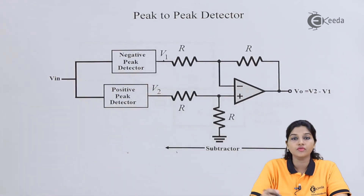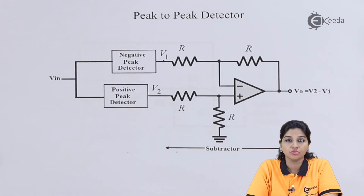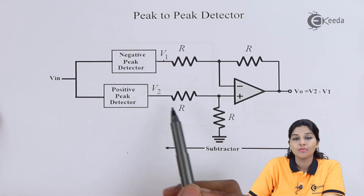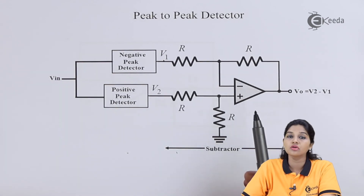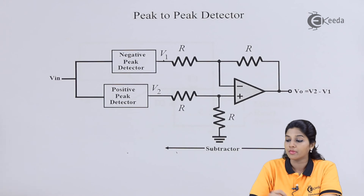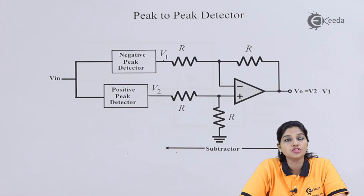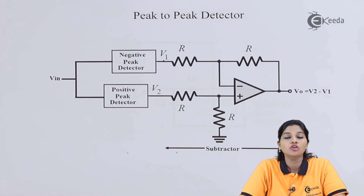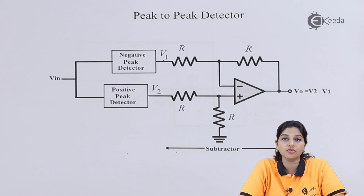At voltage V1 we get the negative peak of the input signal, and at voltage V2 we get the positive peak value. V1 and V2 are applied as inputs to the op-amp acting as a subtractor, so at the output we get V0 = V2 minus V1, which is the difference between the voltages at the non-inverting and inverting terminals. Finally, at the output we get both the positive as well as negative peak value. The peak-to-peak detector is used in applications like testing and measurement, amplitude modulation, amplitude demodulation, and many more.